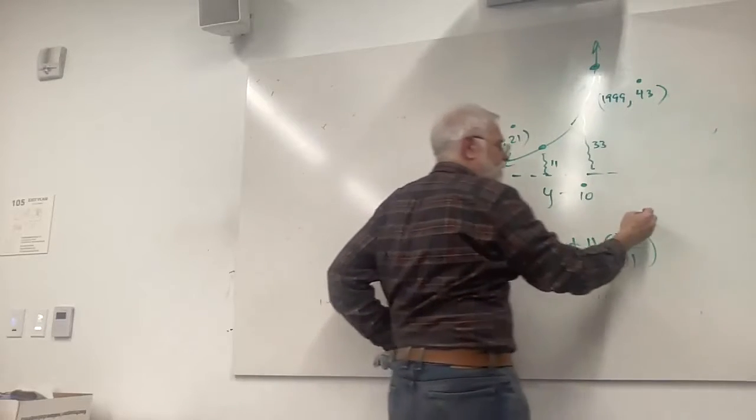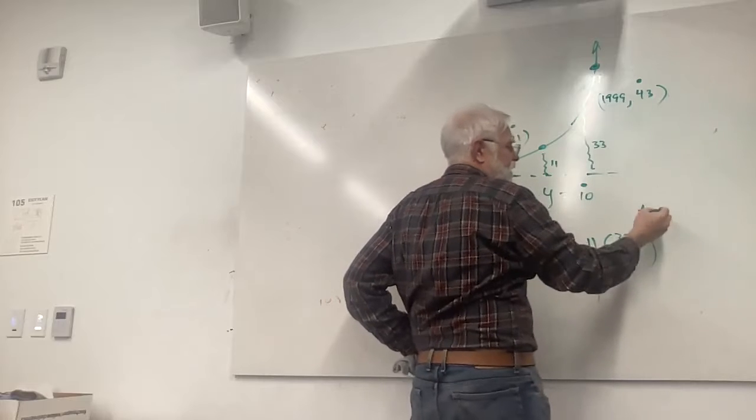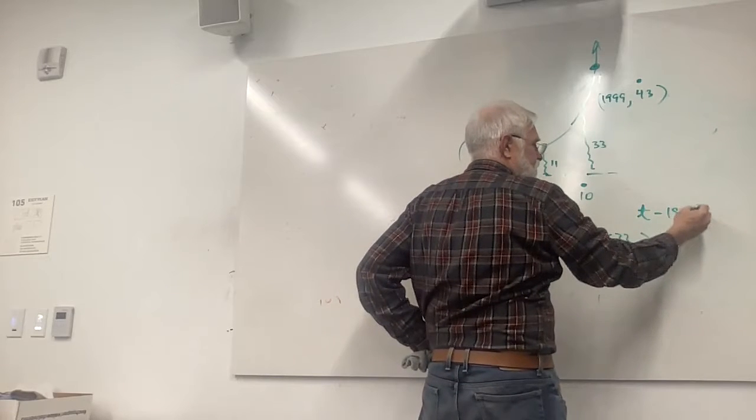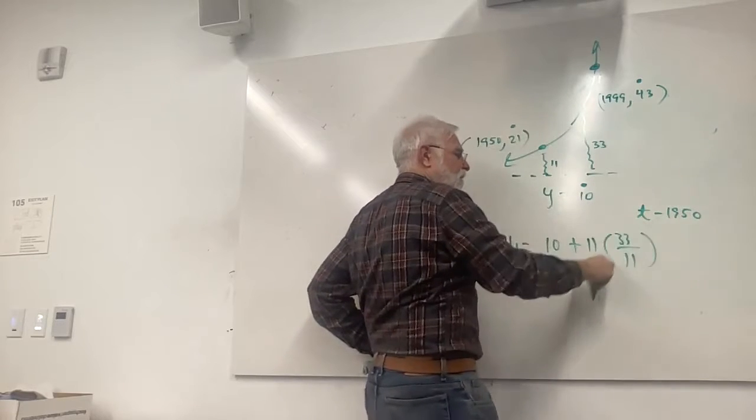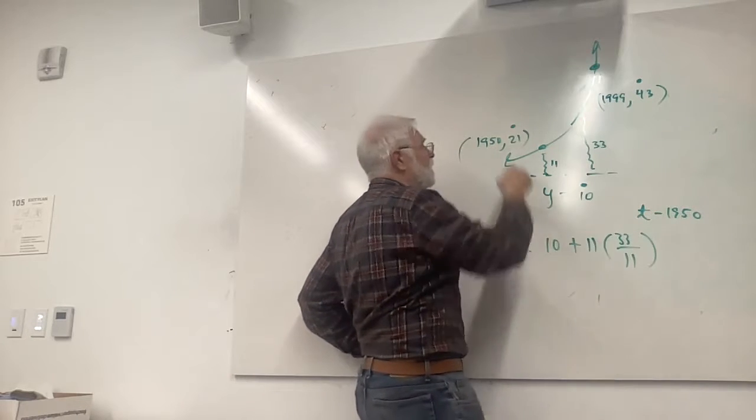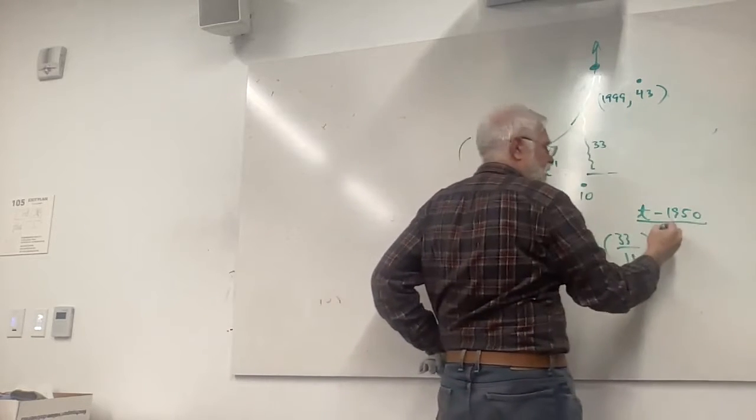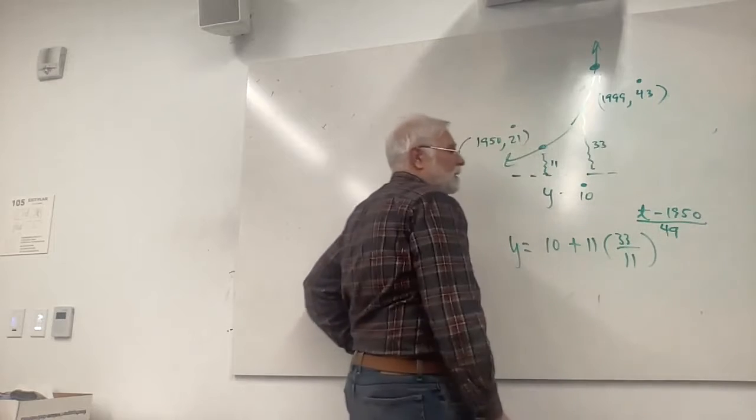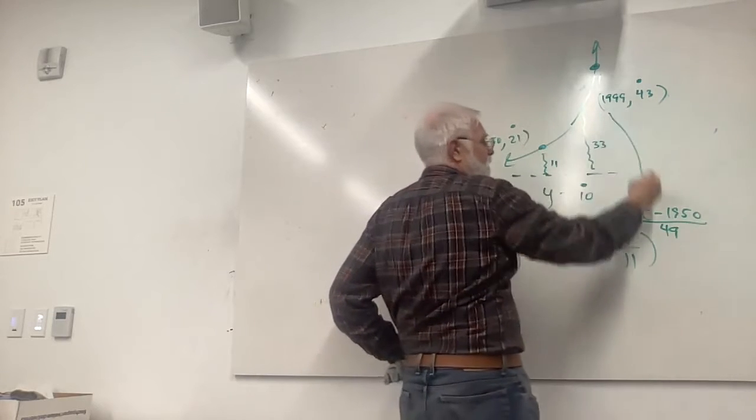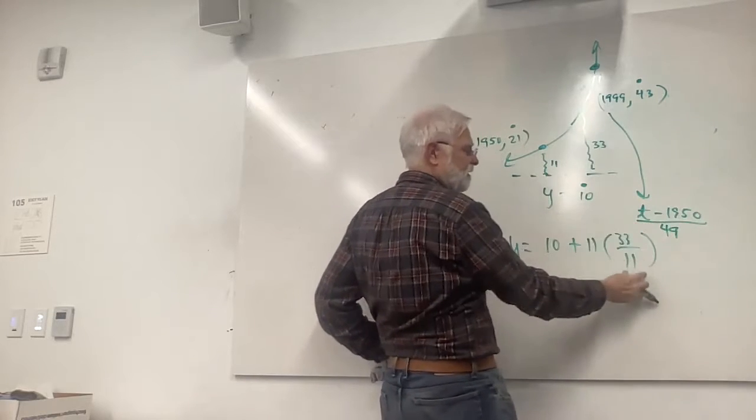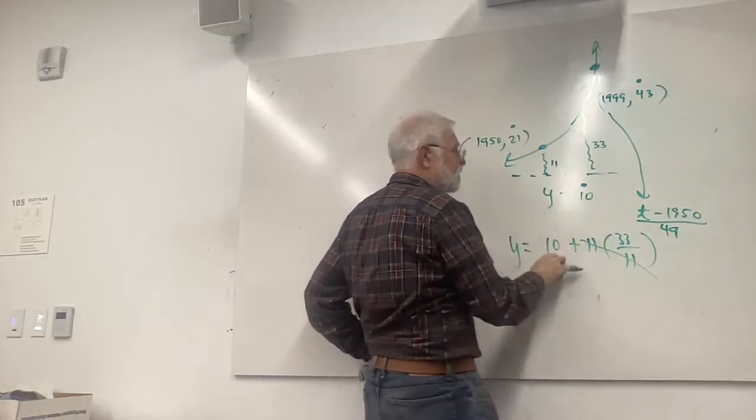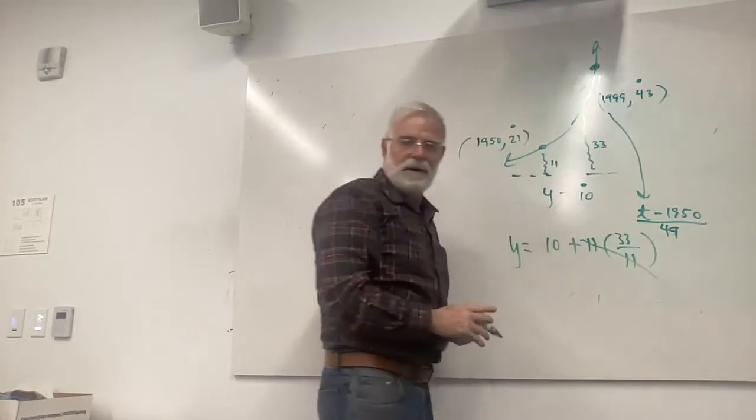Y equals 10. Every value is above 10. 21 to 10 is 11. Next one's 10 to 43, which is 33. I got a tripling function. Those are the y values. Now we got to get 1950 and make it a zero. I'm going to use t. How much time has elapsed? 49 years. So when I put 1999 in, 49 divided by 49 gets me the base.